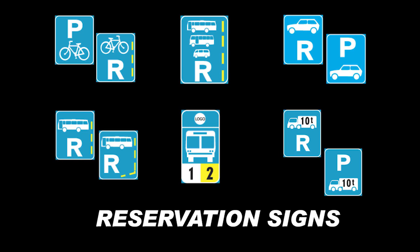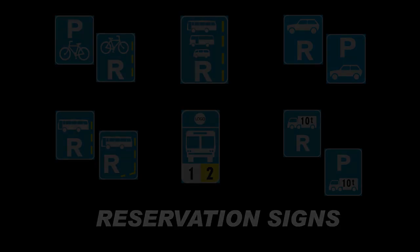Reservation signs are rectangular in shape with a blue background and a white border. They indicate reservations for certain vehicles, symbolised by a specific vehicle icon on the sign. No other vehicles are allowed to use that part of the road. Signs marked with the letter 'P' are for parking only, and those marked 'R' are reserved for specific vehicles permitted to use that section of road.